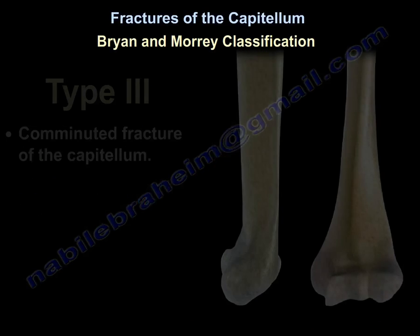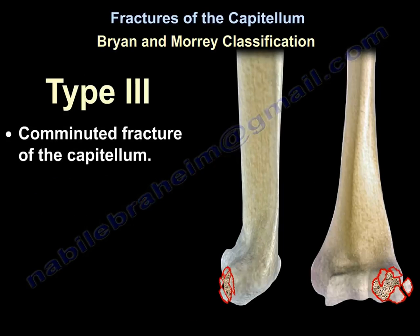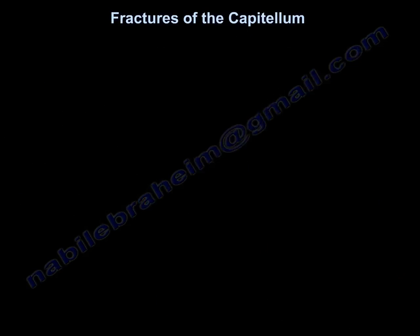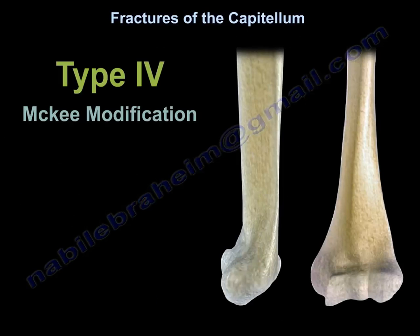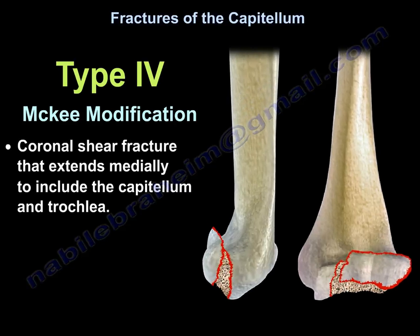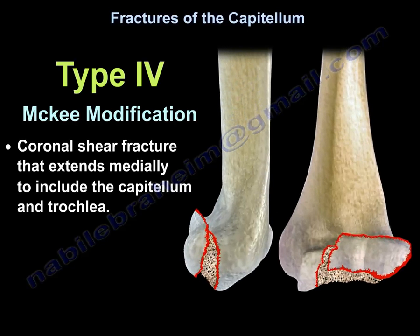Type 3: Comminuted Fracture of the Capitulum. Type 4: the McKee Modification — a coronal shear fracture that extends medially to include both the capitulum and trochlea.